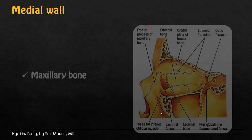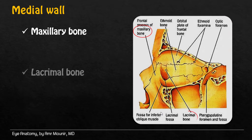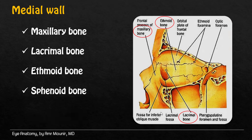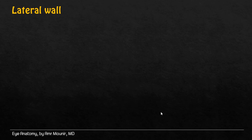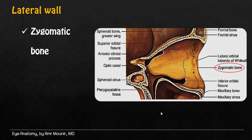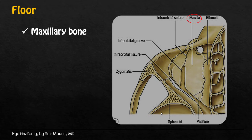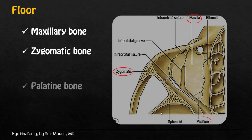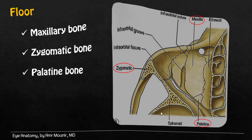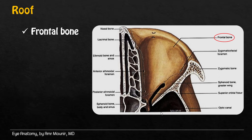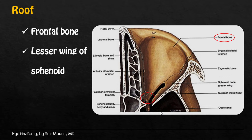The medial wall of the orbit is formed of maxillary bone, lacrimal bone, ismoid bone, and sphenoid bone. The lateral wall of the orbit is formed of zygomatic bone and greater wing of sphenoid bone. The floor of the orbit is formed of maxillary bone, zygomatic bone, and palatine bone. The roof of the orbit is formed of frontal bone and leather wing of sphenoid bone.